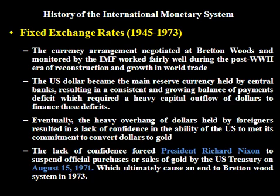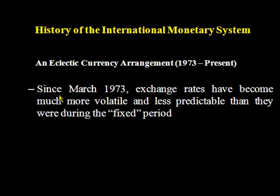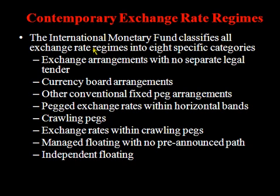In the post-Bretton Woods system, different countries started following different exchange rate regimes. After 1973, the contemporary exchange rate regimes in the world can be classified into these categories: exchange arrangement with no separate legal tender, currency board arrangement, other conventional fixed peg arrangement, pegged exchange rate within a horizontal band, crawling peg, exchange rate within the crawling peg, managed floating with no pre-announced path, and independent floating.